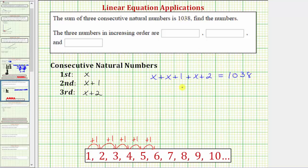Next we'll simplify the left side of the equation by combining like terms. X plus x plus x equals three x, or one x plus one x plus one x is three x. So we have three x, and then one plus two is three.